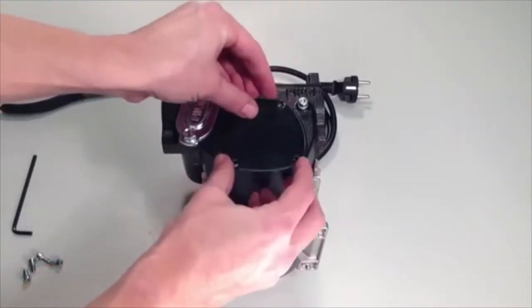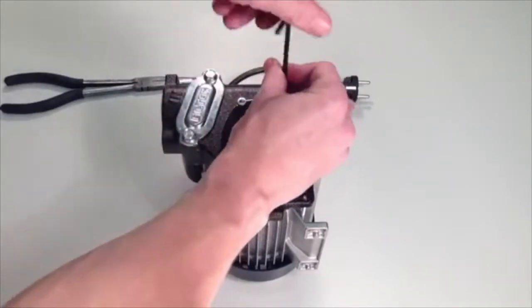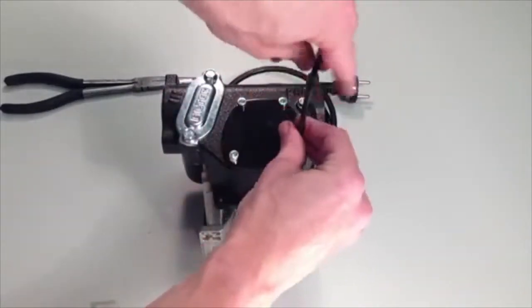When all of the vanes have been replaced, replace the cover plate and secure with the four cover plate screws using the allen key to tighten. When you have done this, the job is complete.